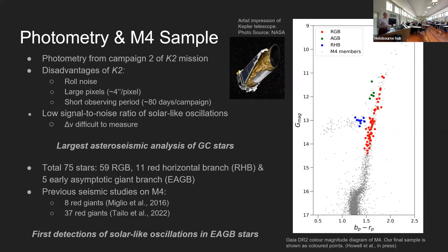Despite all these limitations, we were still able to detect solar-like oscillations in 75 evolved stars across the evolutionary phases of the red giant branch, the red horizontal branch, and the early asymptotic giant branch. This is the largest asteroseismic analysis of globular cluster stars to date — there have only been two other seismic studies on M4, and our sample is a significant increase from those. Another exciting outcome is that we have the first detections of solar-like oscillations in early asymptotic giant branch stars. I show my sample in a Gaia color-magnitude diagram on the right.